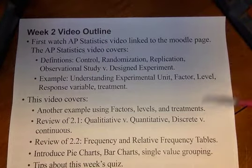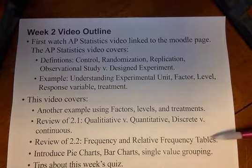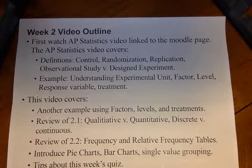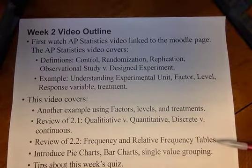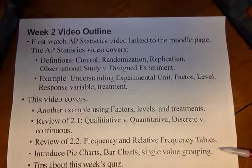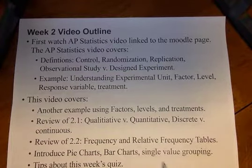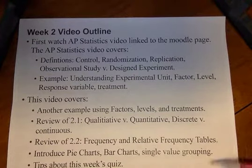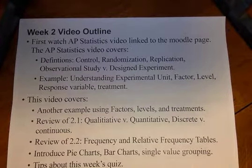In this video, I'm going to do one more example talking about factors, levels, and treatments. Then we're going to review some of the stuff we did last time — qualitative and quantitative variables, discrete and continuous variables. We'll go back over frequency and relative frequency tables. Then we'll start talking about how you might graphically display some of this stuff: pie charts and bar charts, as well as a way of organizing tables for quantitative data called single value grouping. And spread throughout, I'll give you some tips about what you should expect to see on this week's quiz.